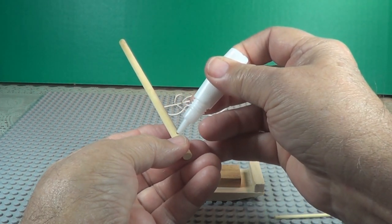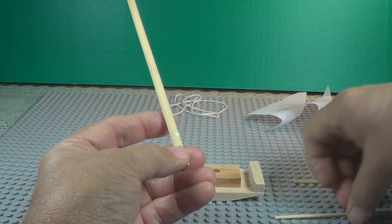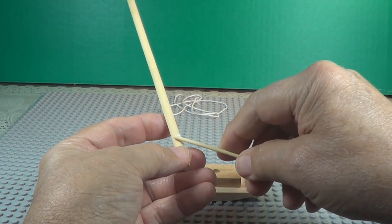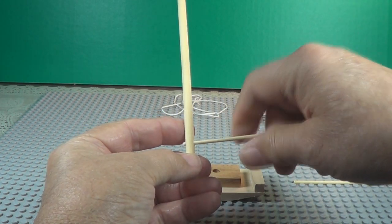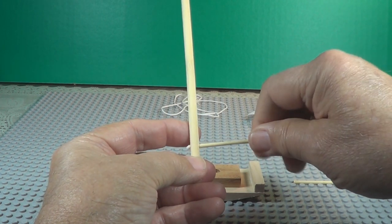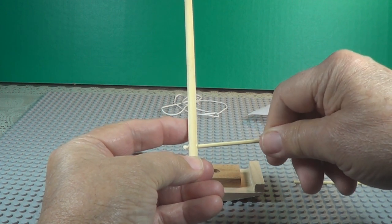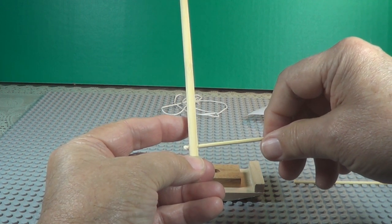Put a little glue on the mast. Slip that in. There you go.